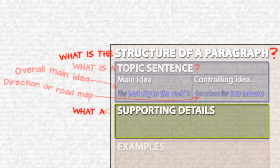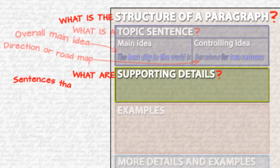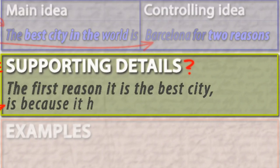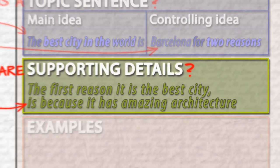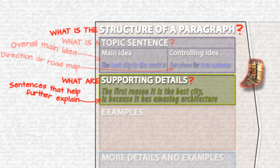What are supporting details? Supporting details are sentences that help further explain the topic sentence by connecting these sentences to the overall ideas. For example, one of the supporting details for the topic sentence above could be, the first reason it is the best city is because it has amazing architecture.